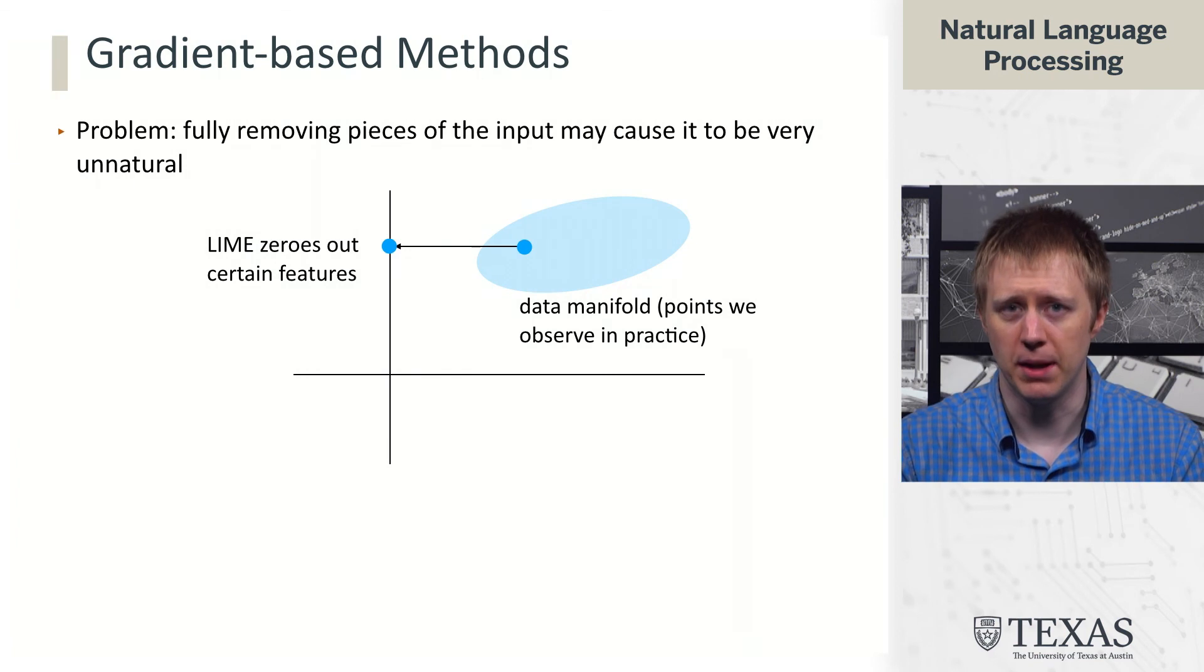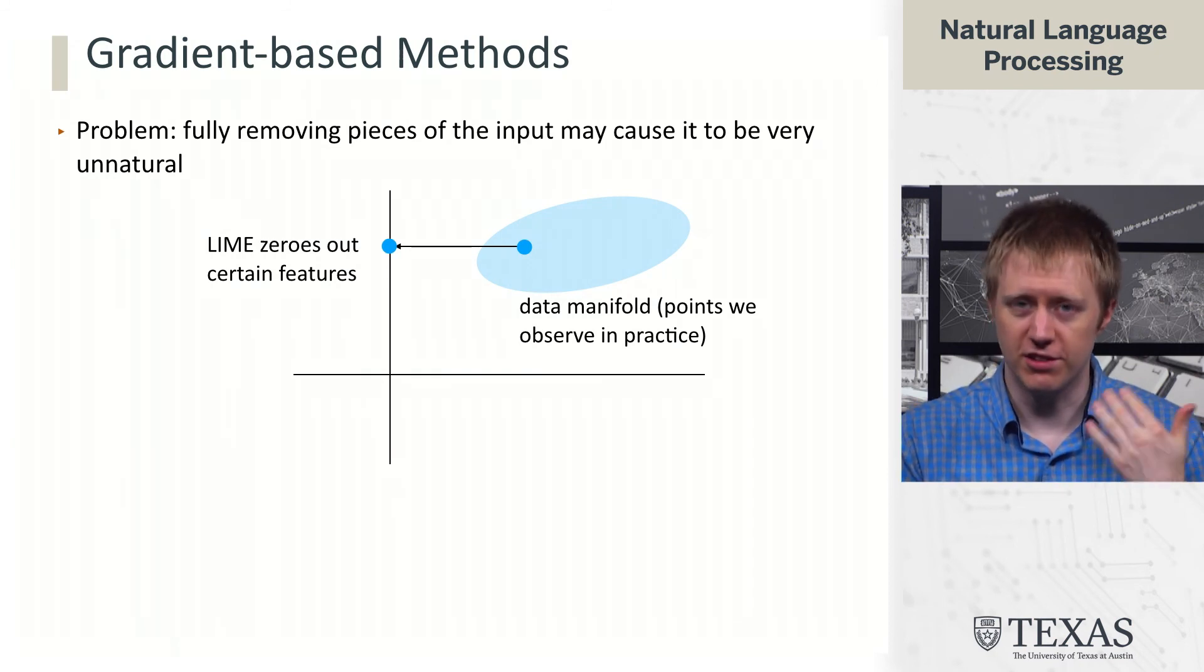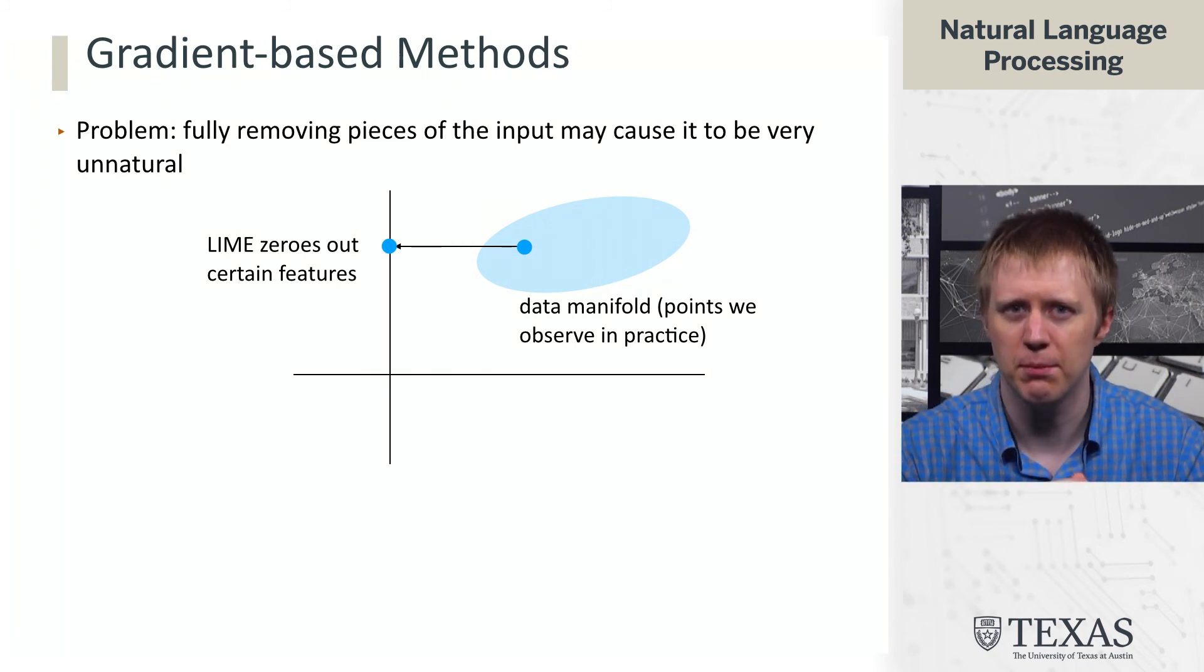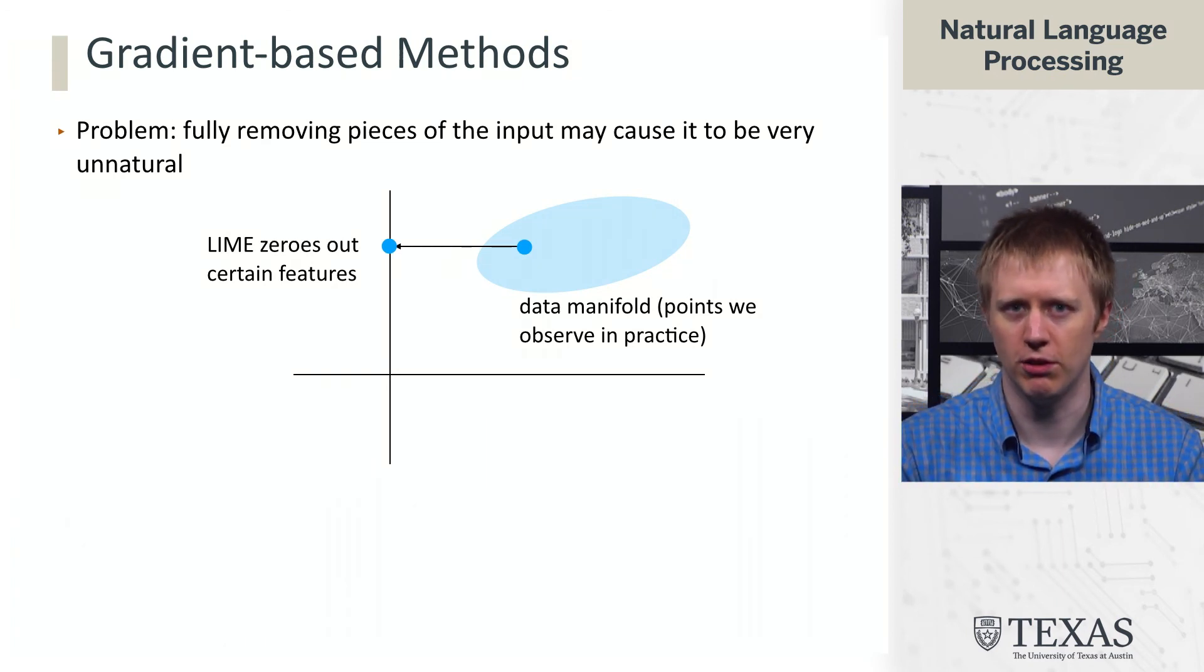And we'll call this the data manifold. So a manifold is basically just a shape or kind of low dimensional surface in a very high dimensional space. And the idea is that there are certain natural sentences or natural images. And that's what the model is going to expect to see. So once we start zeroing out a bunch of features or masking out a bunch of stuff, we're no longer seeing a natural sentence. And our model might just behave unpredictably here. And so what comes out of this Lime procedure may not actually be that reliable because maybe the model's making certain decisions when it's seeing data points it's comfortable with. And then as soon as you're masking stuff, it's doing something totally weird and crazy because it wasn't trained to see those examples.